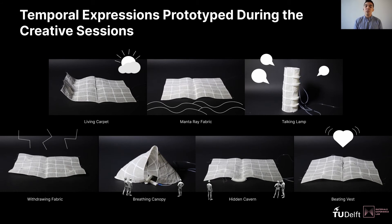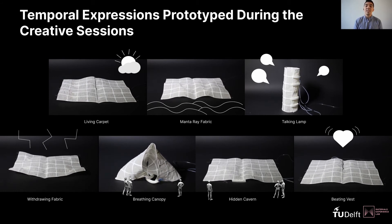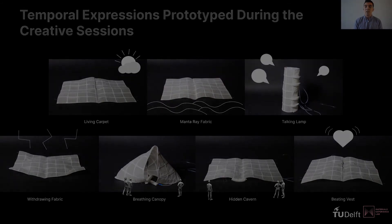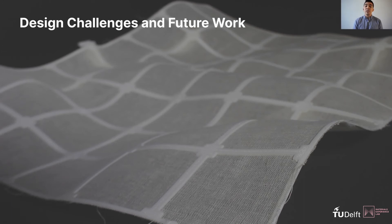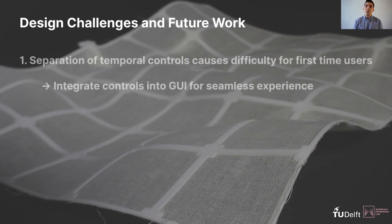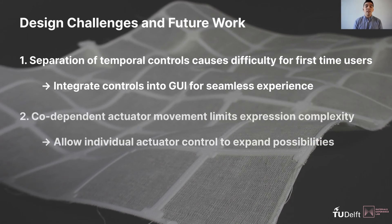This result aligns with previous studies in which rhythmic movements lead to biological interpretation in textile interfaces. Although the Textilife toolkit proved to aid designers in exploring temporal expressions in a relatively easy and agile manner, several practical limitations still exist for HCI designers. Firstly, the separation of temporal controls for duration cycles and speed of movement causes difficulty for first-time users; these controls can be integrated together into the GUI in the future. Secondly, the codependent movement of the actuators makes it difficult to achieve more complex expressions — we recommend allowing individual control over each actuator to expand creative possibilities.